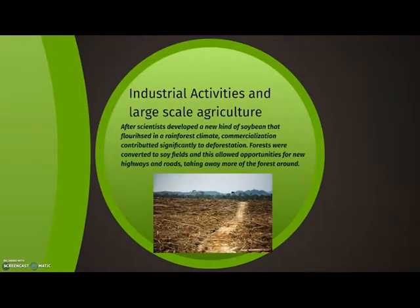Industrial activities and large-scale agriculture. After scientists developed a new kind of soybean that flourished in rainforest climates, its commercialization contributed significantly to deforestation. Forests were converted to soy fields, and this allowed opportunities for new highways and roads, taking away more of the surrounding forest.